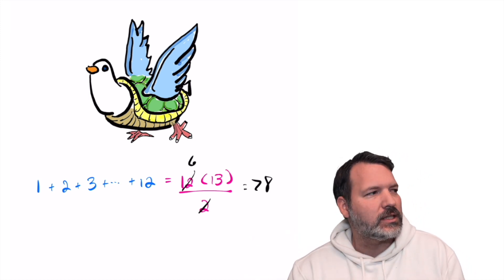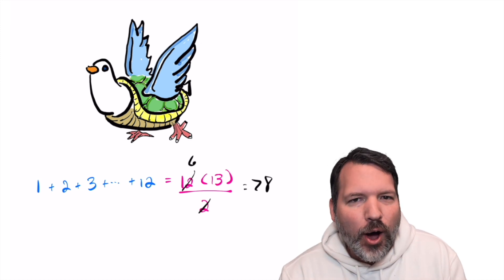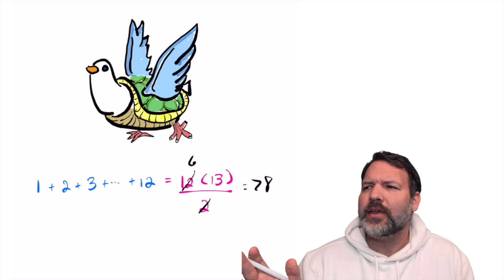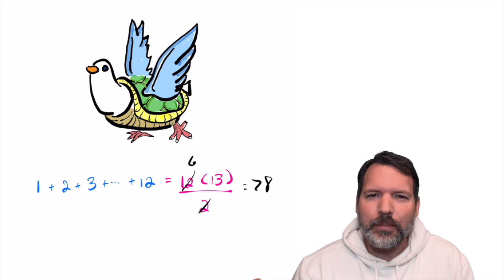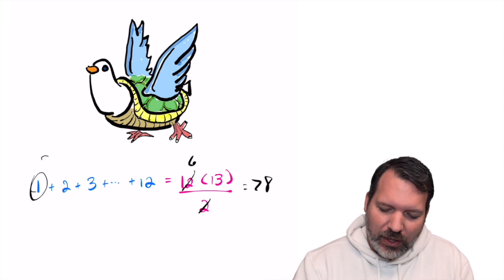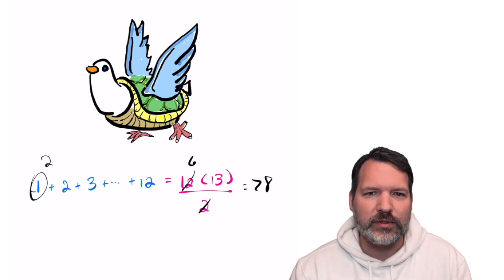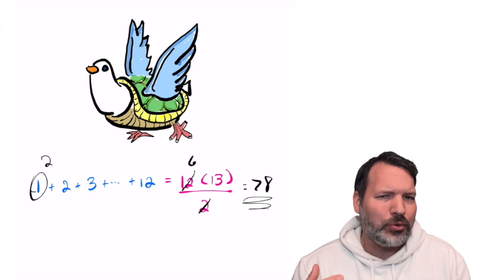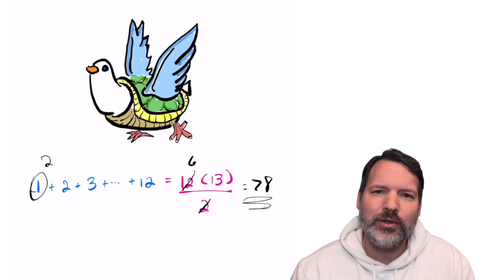Student looks at me. She gets this smirk on her face. No, she says, there are 364. And I think, whoa, whoa, whoa. Like, if the partridge and the pear tree count as two or something, so maybe there are two items on this first day, we might have an answer that's a little bigger than 78. But 364, what are you talking about?